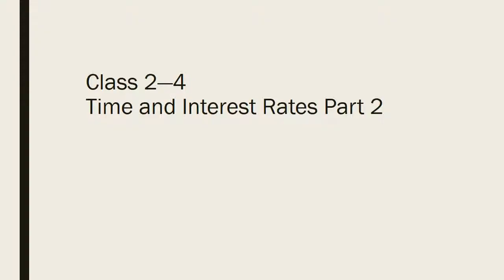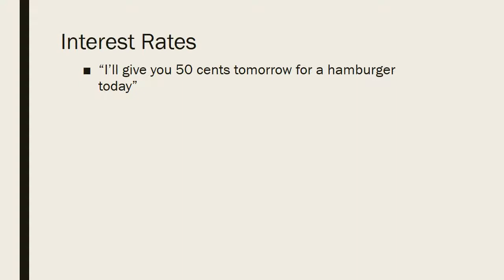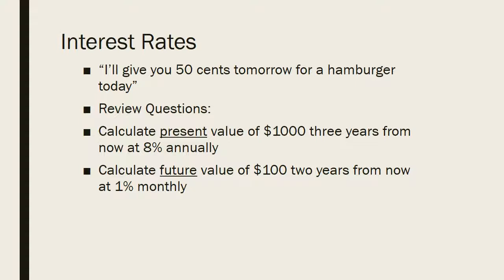Back by popular demand, I bring you more time in interest rates. One way of looking at interest rates is good old Popeye — the example from the cartoon of 'I'll give you 50 cents tomorrow for a hamburger today.' There's a certain amount of risk, a certain interest rate involved, and preferences over time to be aware of. I recommend pausing the video and going through the two practice problems, reviewing the previous video's formulas if needed, so you grasp the concept of present value and future value and have the right formula in mind for each.